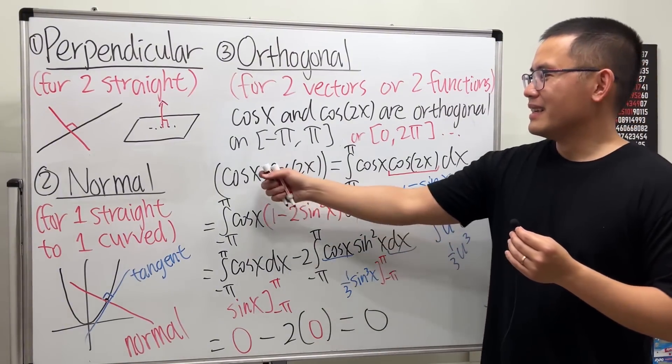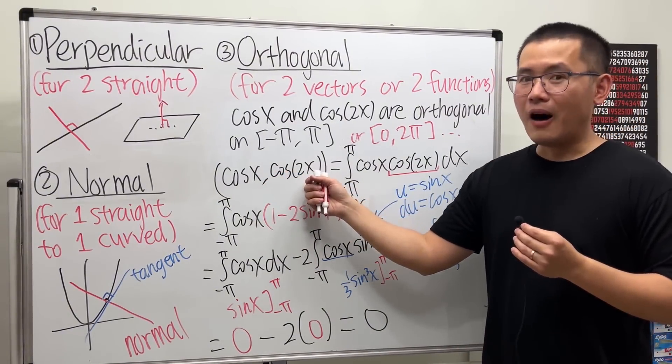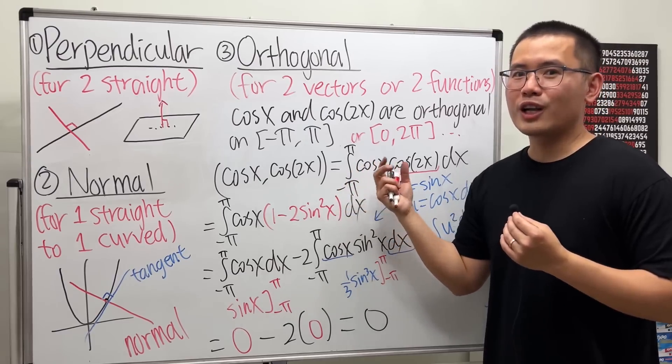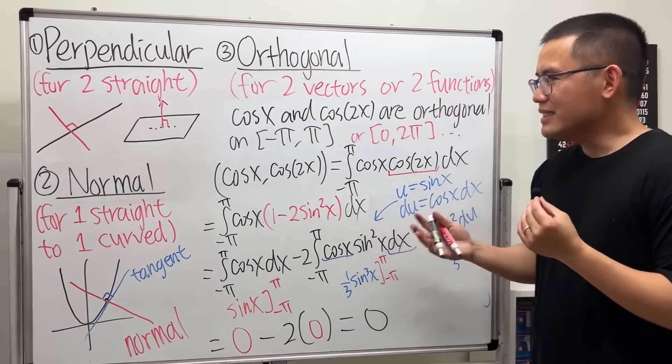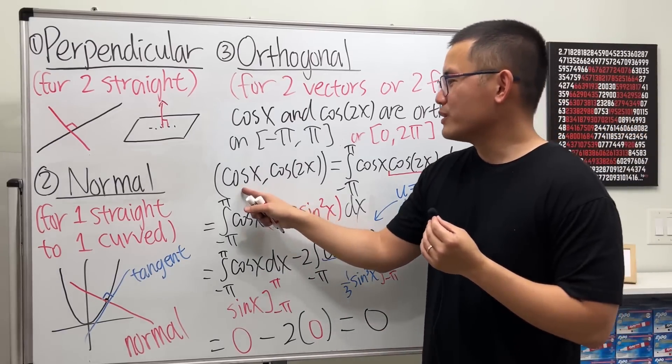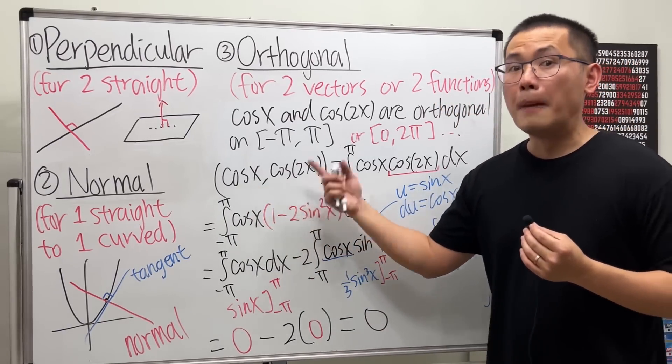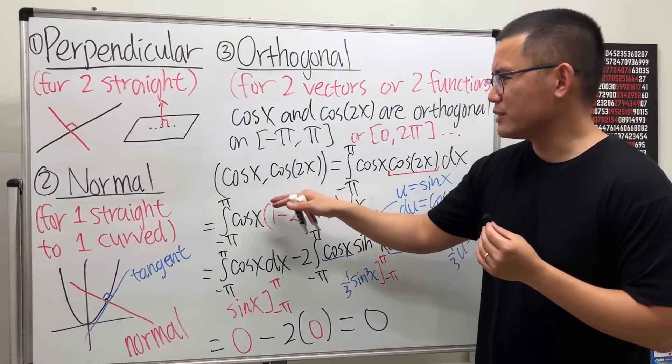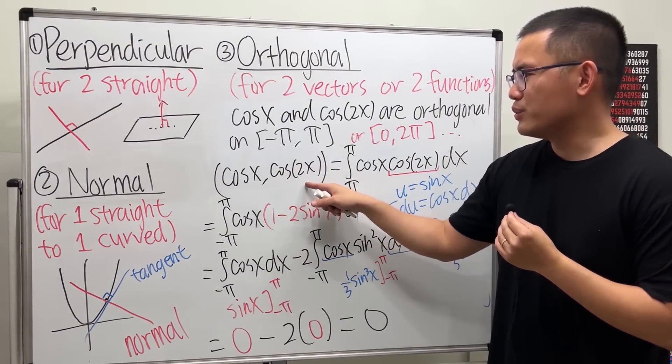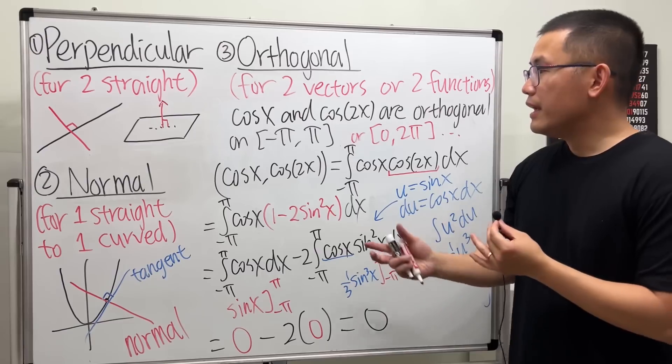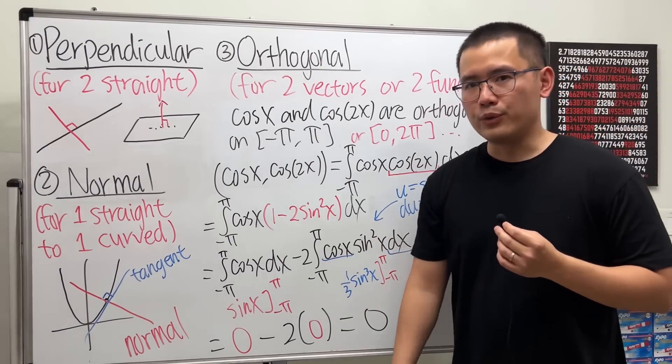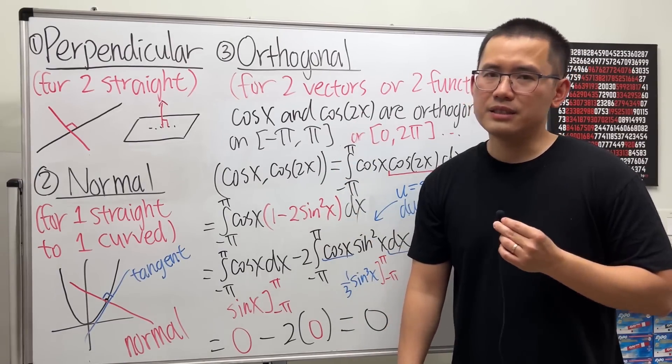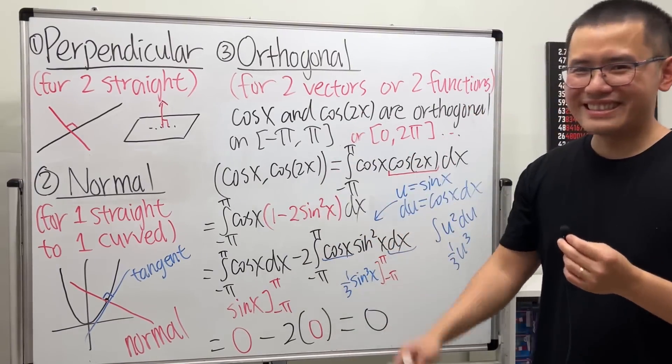So cos(x) and cos(2x) are orthogonal. And you see, in this case, when we're talking about two functions, it doesn't quite make sense to say cos(x) and cos(2x) are perpendicular. It also doesn't really make too much sense to say cos(x) and cos(2x) are normal. So I think these are the differences that can come up for you between these three terms. And if you have any other ideas, please leave a comment down below and let me know. That's it.